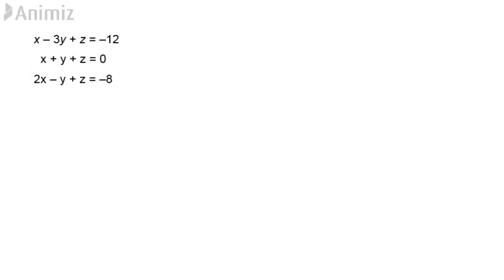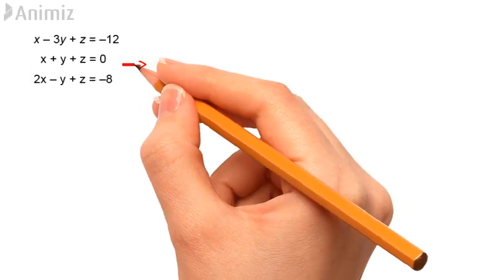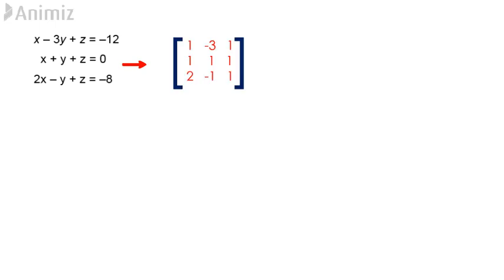Before going any further, we are going to let the matrix containing the coefficients of x, y and z of the three equations be A. We shall let the matrix containing the values on the right-hand side of the three equations be B.